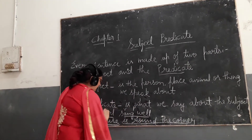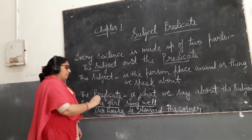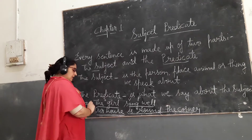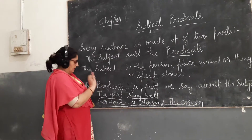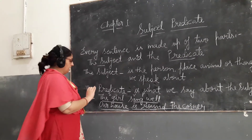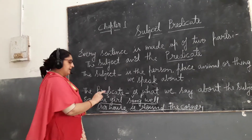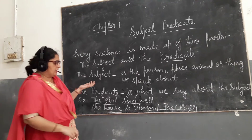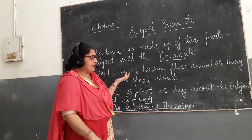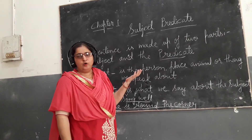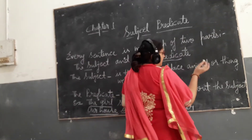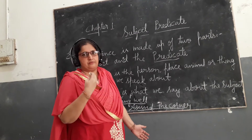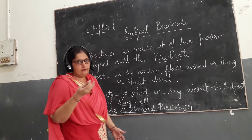The subject has only one key word. For example, 'I am speaking well' — here 'I' is the subject, and 'am speaking well' is the predicate. So 'I' alone is the subject, and the remaining part forms the predicate.